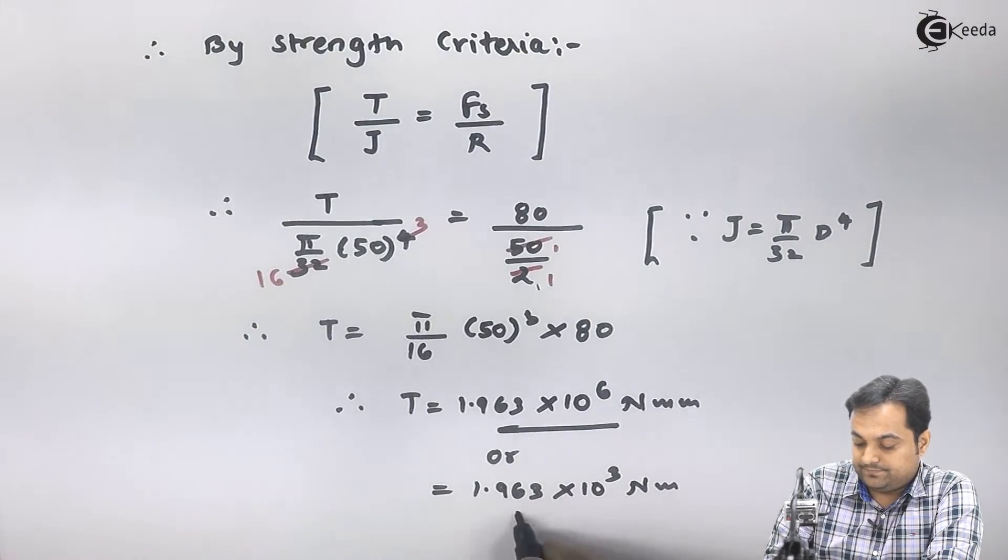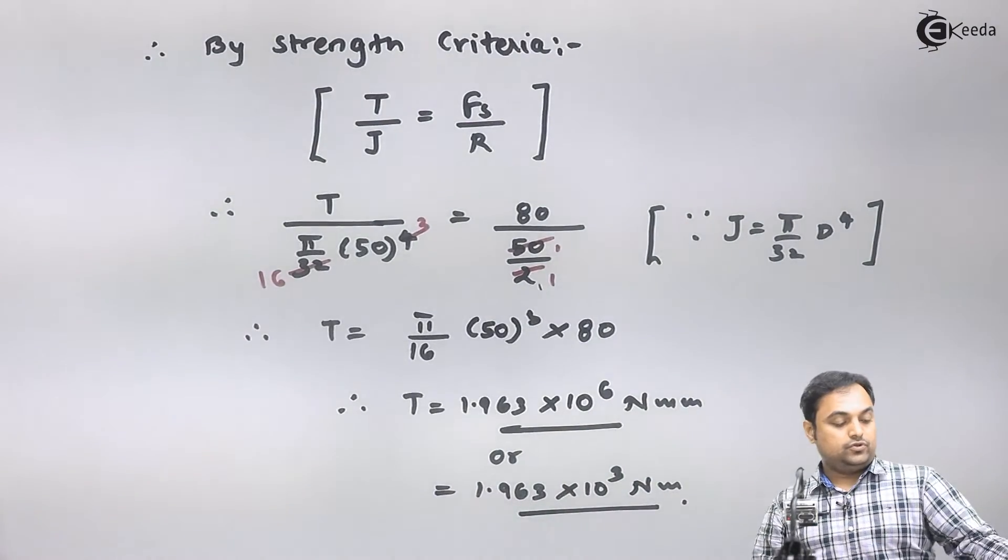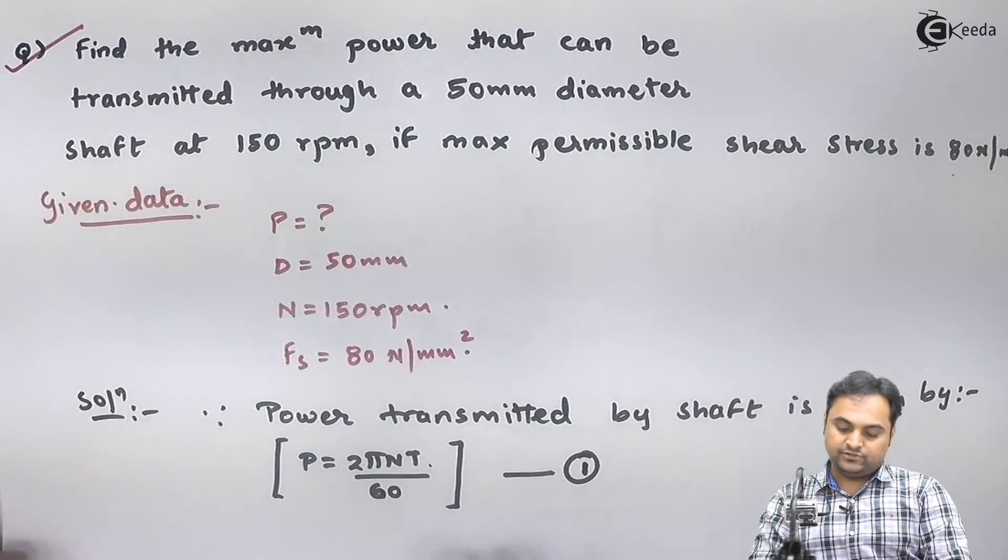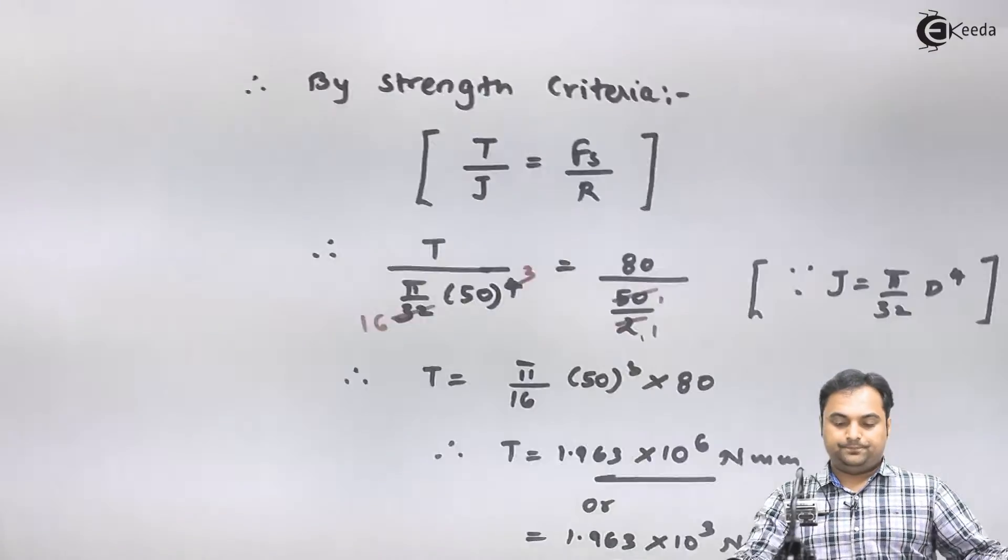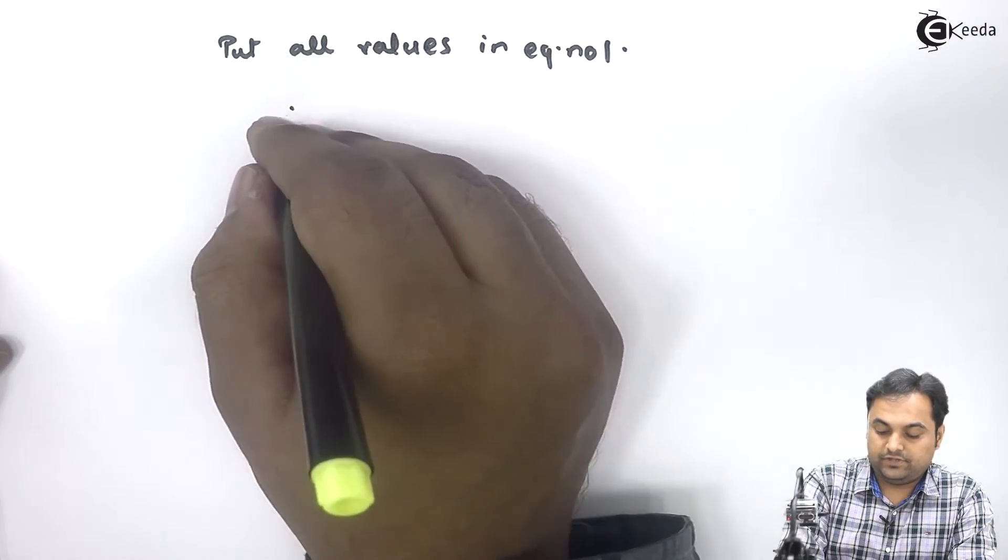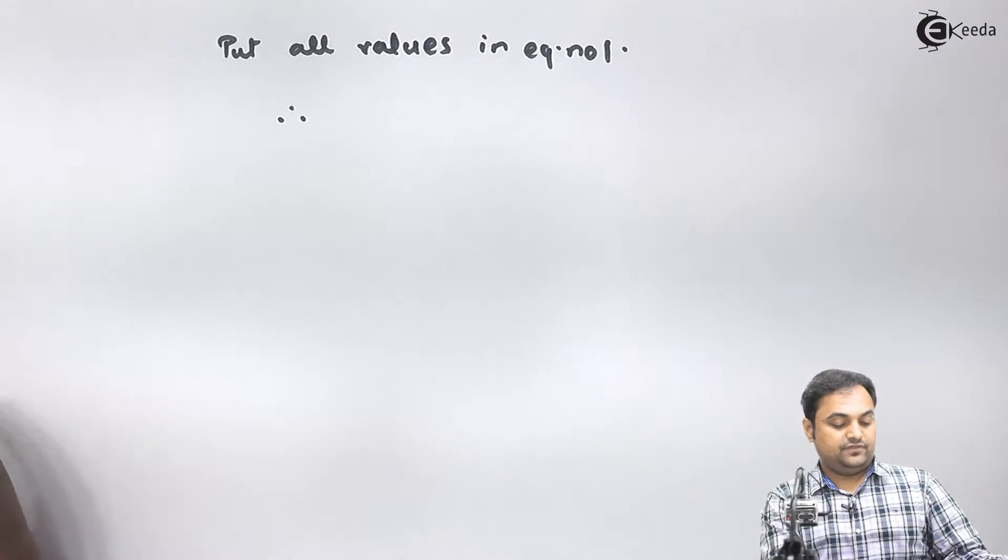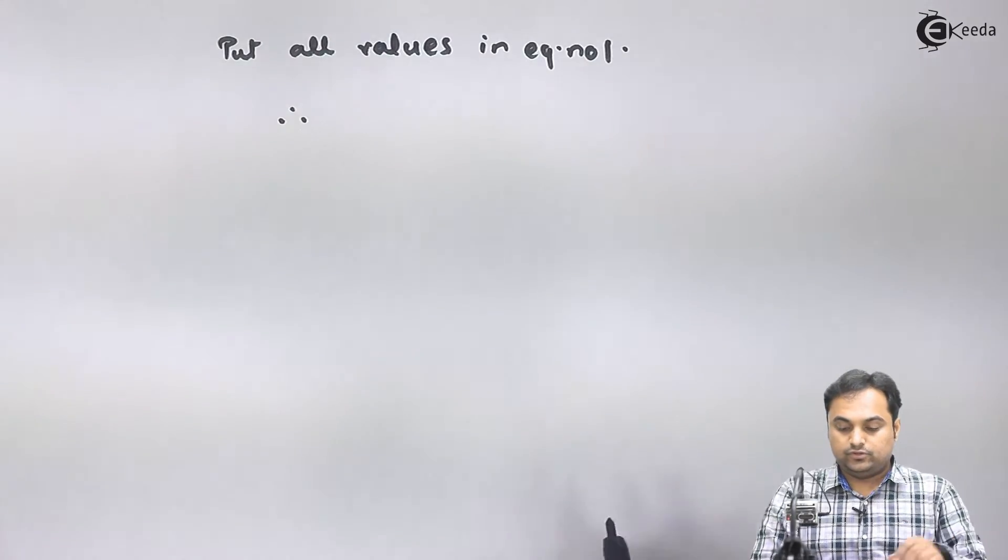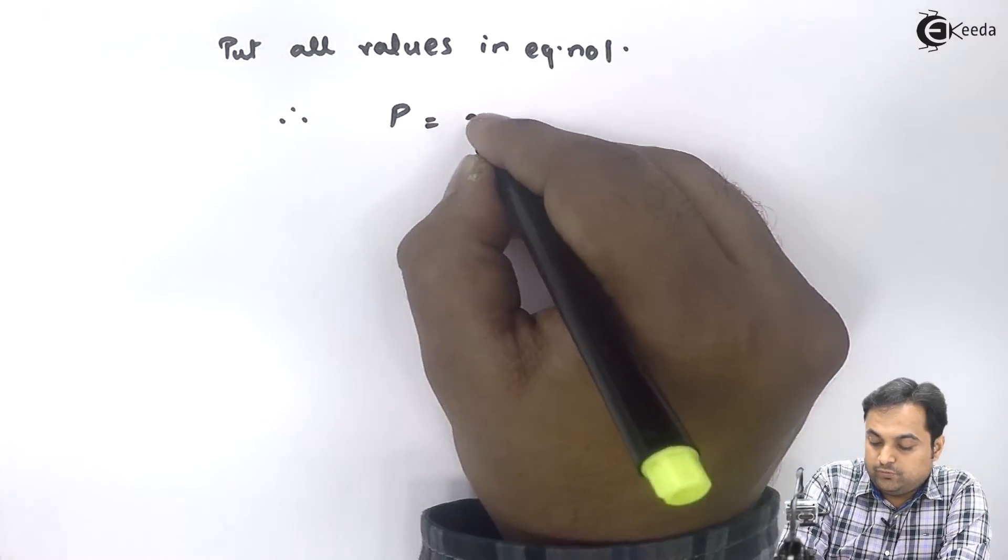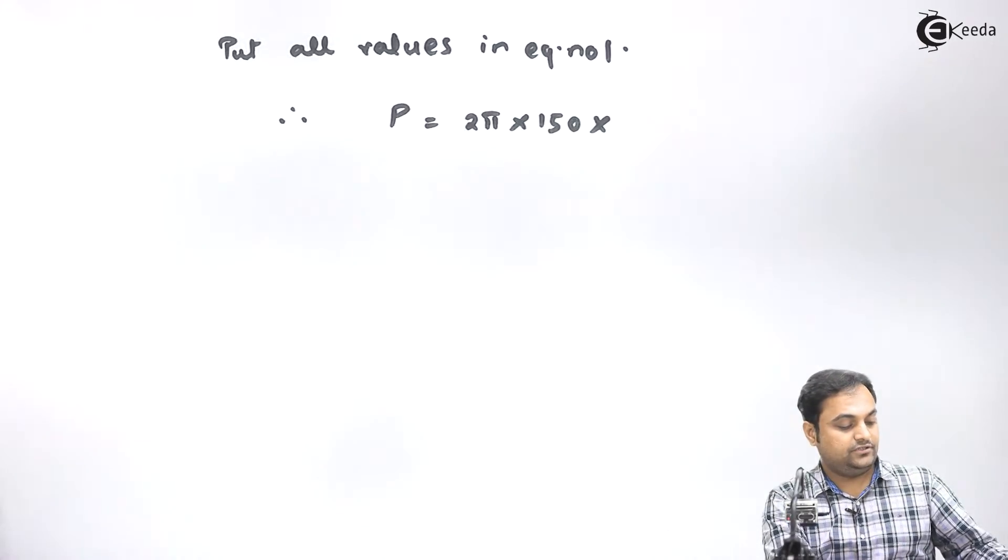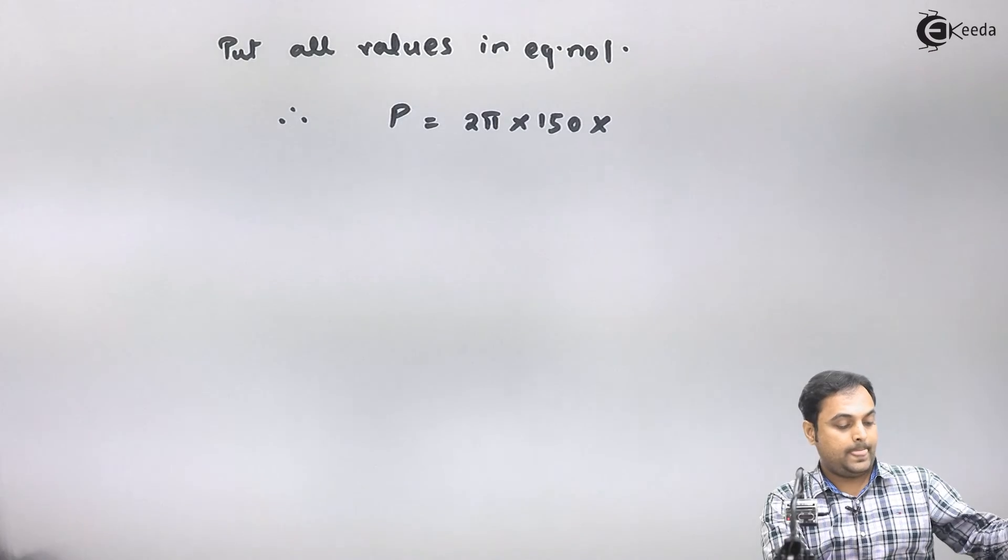As we see in equation number 1, we have found all the values. I will put all values in equation number 1. Therefore P = 2π × N = 2π × 150 × T, where torque value is 1.963...